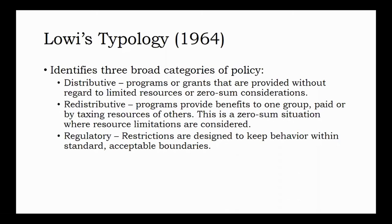A distributive policy provides something to everyone equally, at least in theory. K-12 education, national defense, and police protection are provided to everyone regardless of their ability to pay — outputs that it makes sense for everyone to have in the same amount. A redistributive policy provides benefits to one group or population paid for by taxing the resources of another, such as taxing corporate profits to pay for SNAP benefits or providing public transit paid for by taxing gasoline bought by drivers.